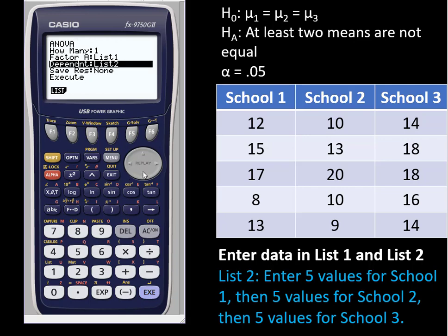Dependent, these are the actual data. The number of hours of studying that match up with the schools. Mine is list 2, and click execute and we have our ANOVA table. That's all there is to getting the ANOVA table once you have the data correctly entered in lists.